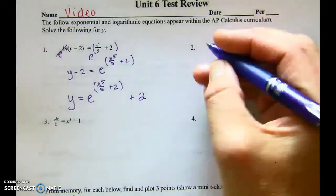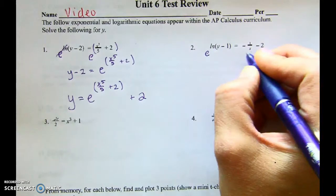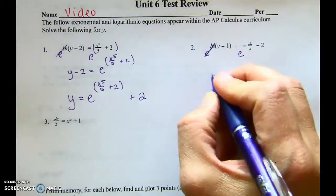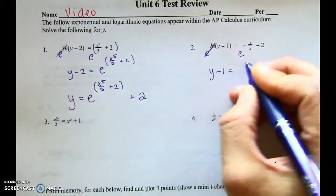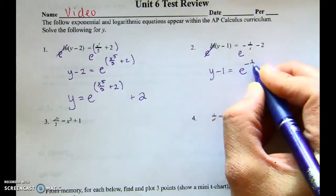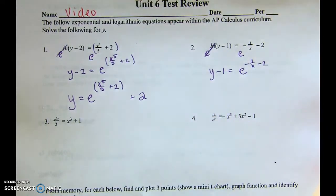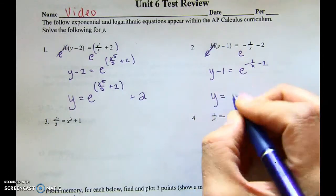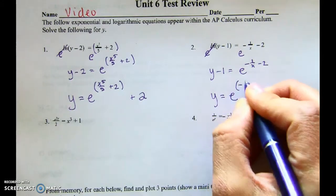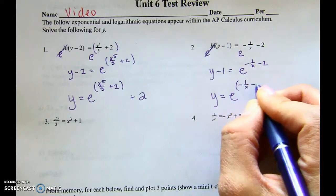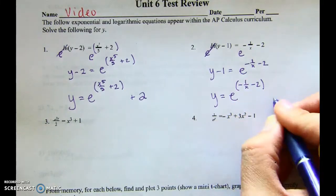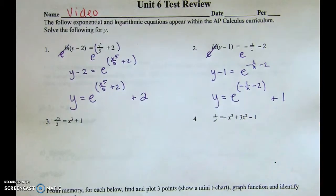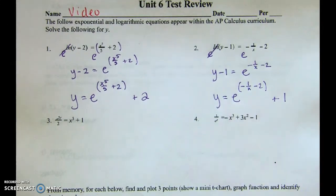Number 2 — a little less explanation. We're raising both sides to the power of e, then get Y by itself: add the 1. So it's e to the power of (negative 1 over x minus 2), and then the plus 1 is on the end — not in the exponent.